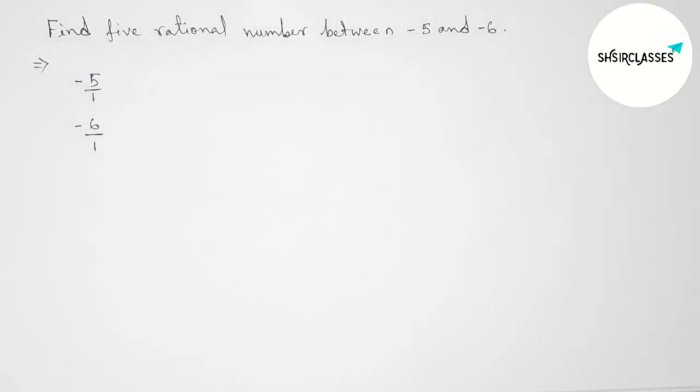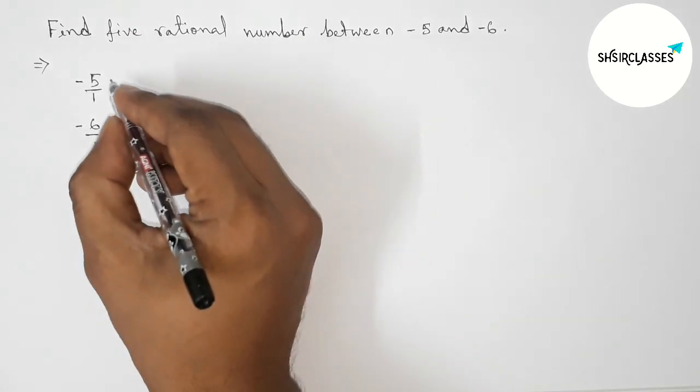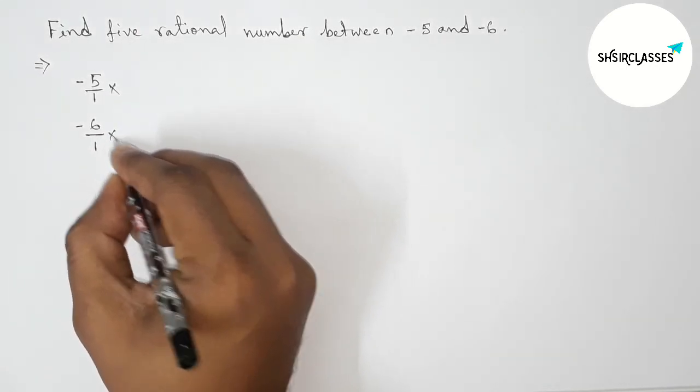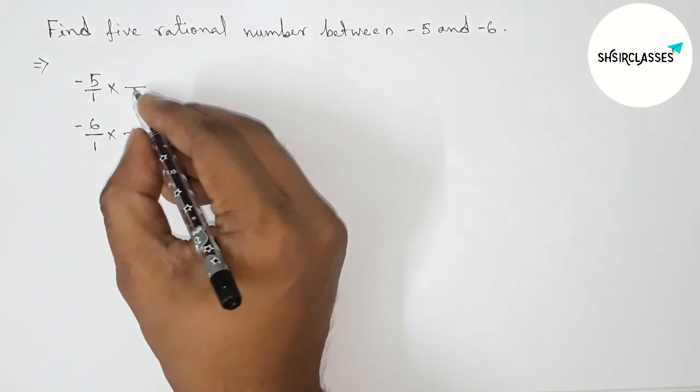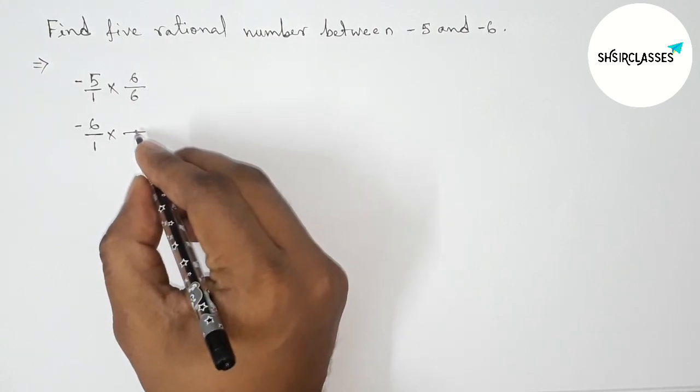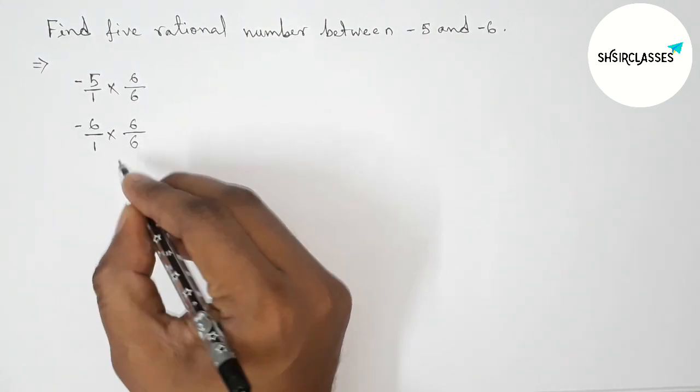For finding 5 rational numbers, we have to multiply both numbers by 6. So for 5 rational numbers we should take 6, multiplying both numbers by 6 in the numerator and denominator.